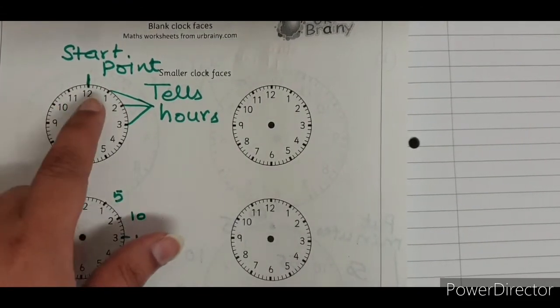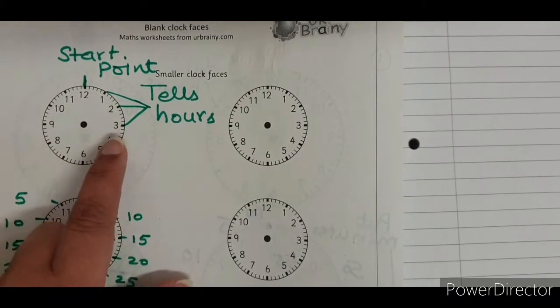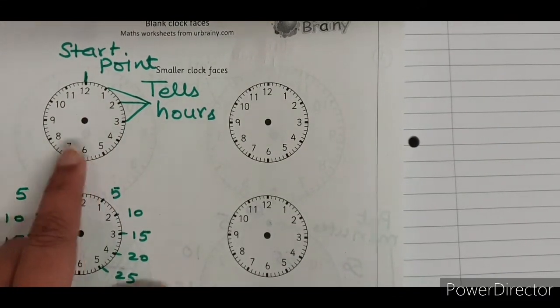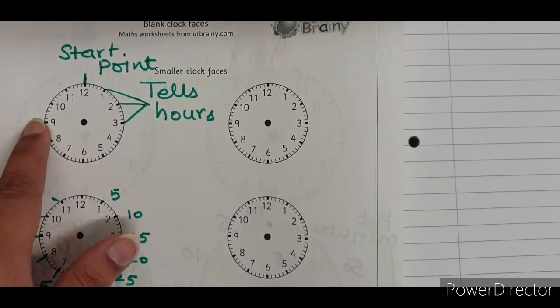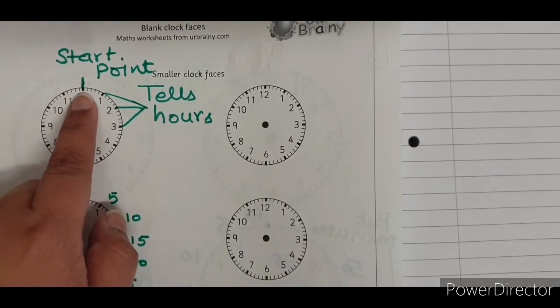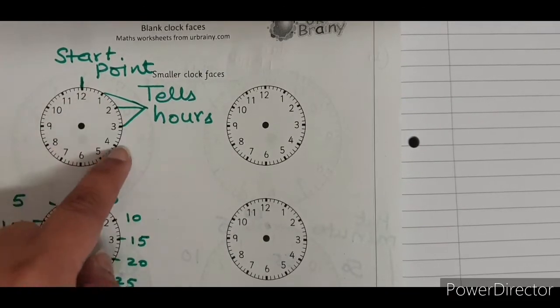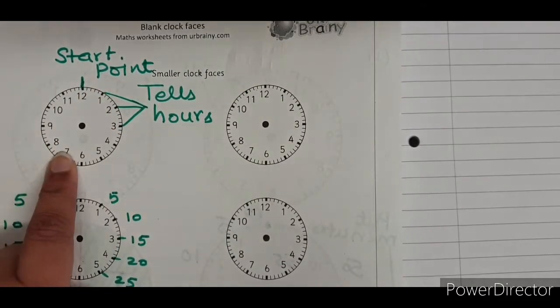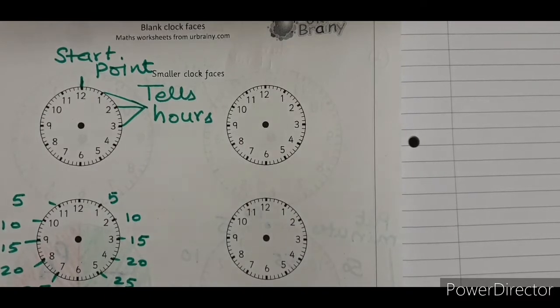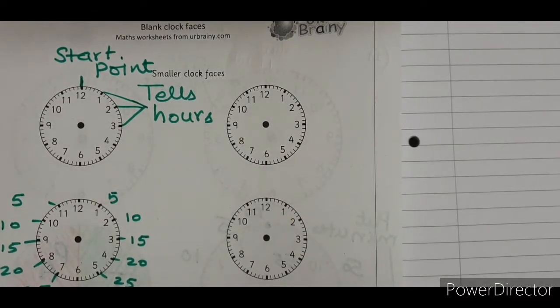These numbers 1, 2, 3, 4, 5, 6, 7, 8, 9, 10, 11, 12. These are always marked in clockwise direction and these numbers tell us hours.